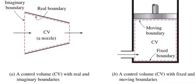A control volume can be fixed in size and shape, as in the case of a nozzle, or it may involve a moving boundary. Most control volumes, however, have fixed boundaries and thus do not involve any moving boundaries.